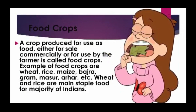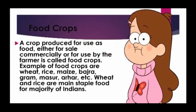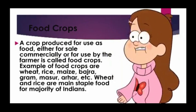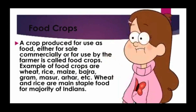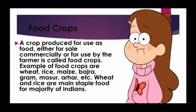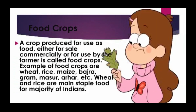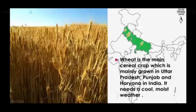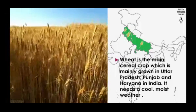A crop produced for use as food, either for sale commercially or for use by the farmer, is called a food crop. Examples of food crops include wheat, rice, maize, bajra, and jowar. Wheat and rice are the main staple foods for the majority of Indians. Wheat is the main cereal crop.